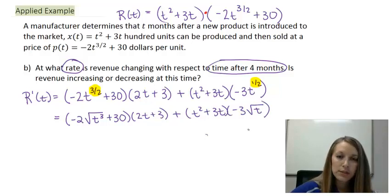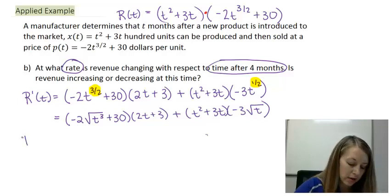Now I can choose to simplify this a lot more by foiling this out, but we don't necessarily want the most simplified derivative. Our whole goal here is to figure out what this is after 4 months. So we can go ahead and skip all that algebra simplification and just go ahead and plug in our form. So let's do that here.